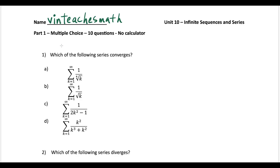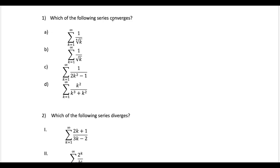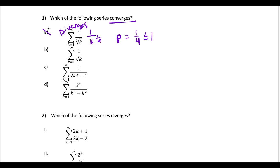So first up, we want to know which of the following series converges. For the multiple choice, you could do a lot of these in your head if you know your convergence tests. For the first one, I rewrite this as 1 over k to the 1/4 power. This is a p-series where the power is 1/4, which is less than or equal to 1, so this series diverges. That means we can eliminate it as an answer choice.